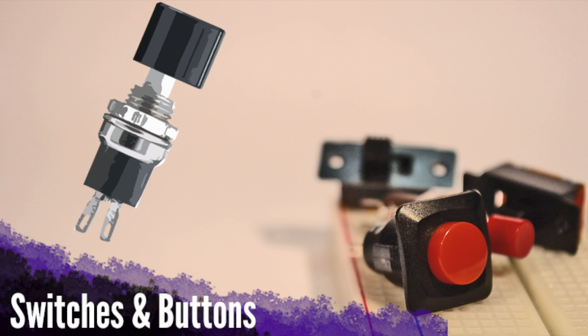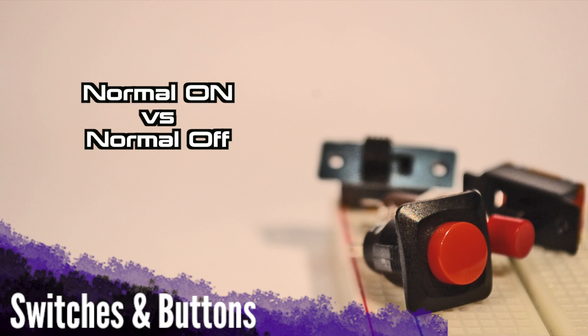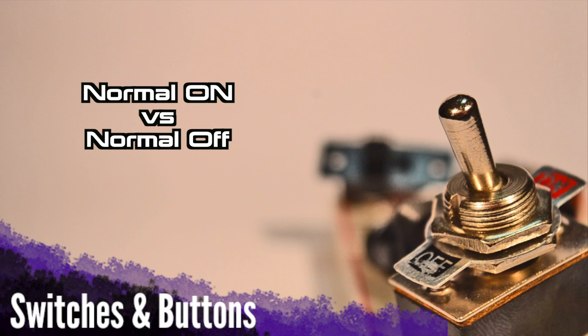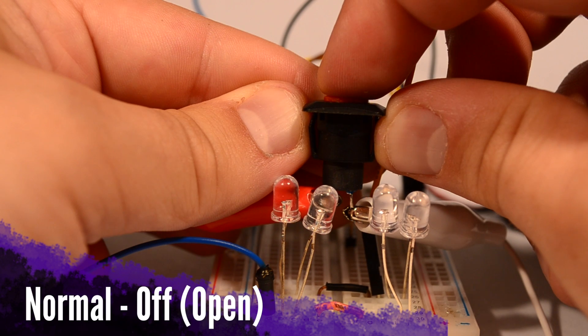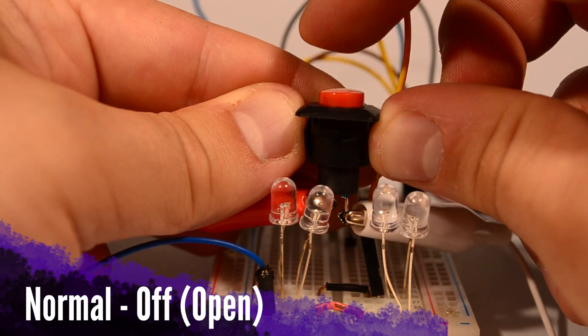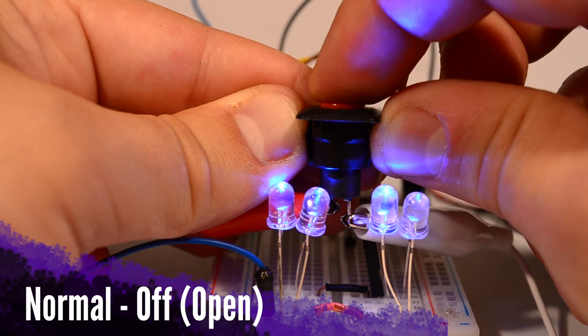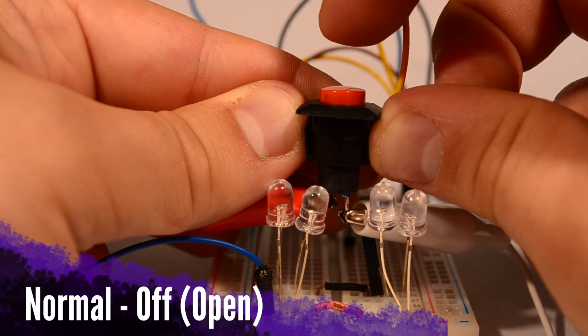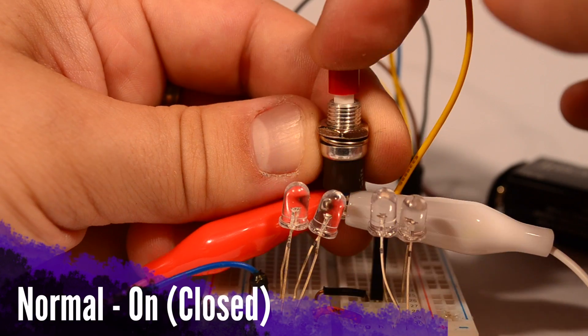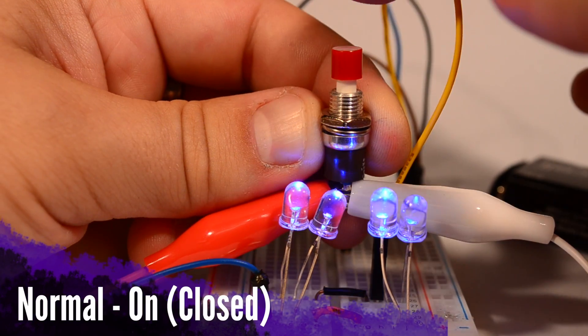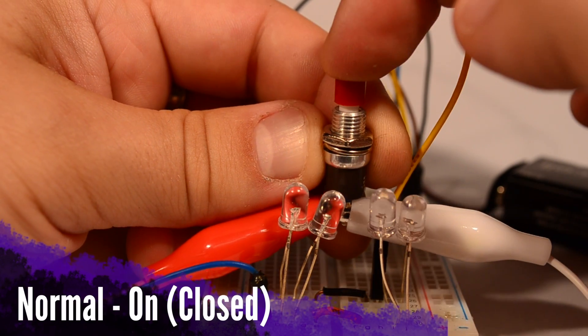You'll often see buttons with the classification normal on or normal off. Buttons that are normal off have a stationary state of being disconnected, meaning that unless you press it, the circuit will be broken at the button. Normal on will of course be the opposite, with the circuit broken only when you do press the button.